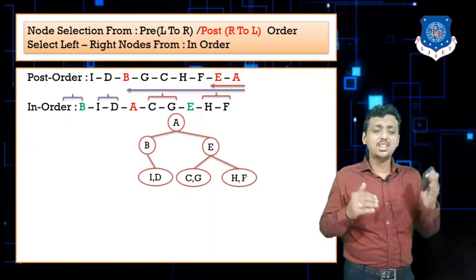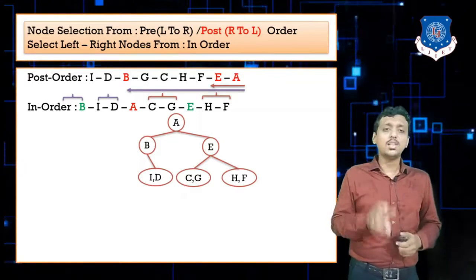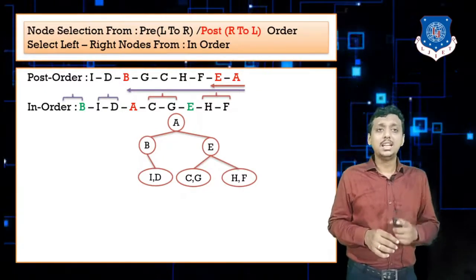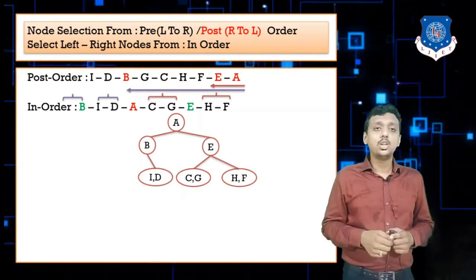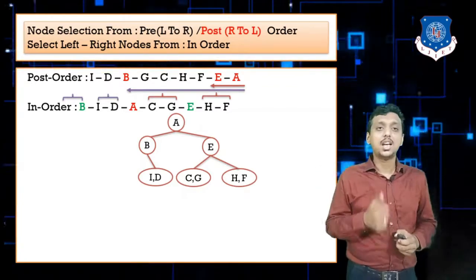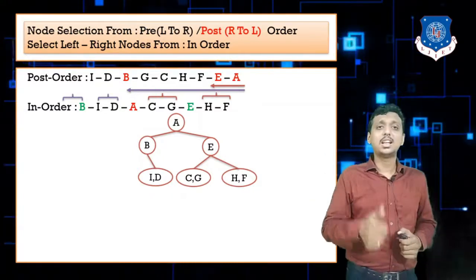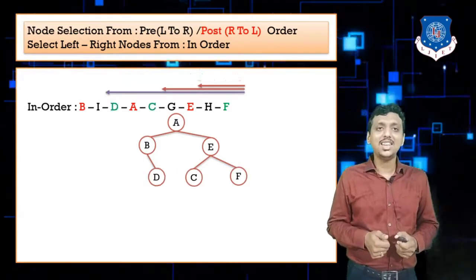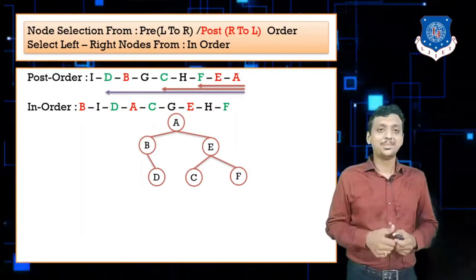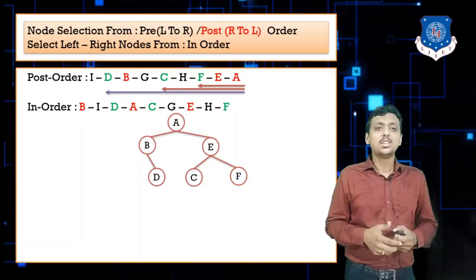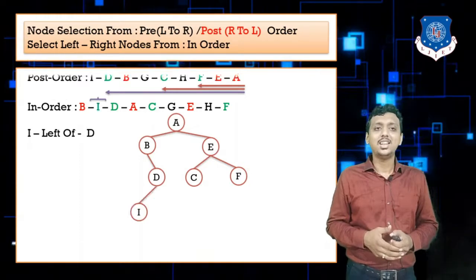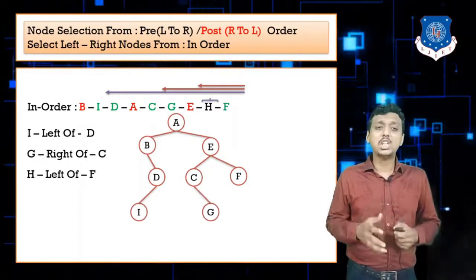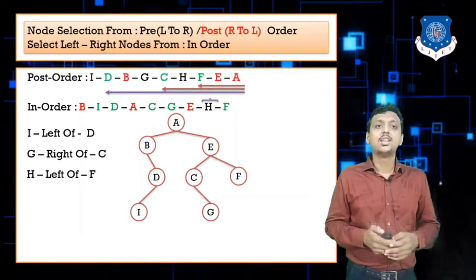Continuing right to left in post-order: from I and D, we select D first; from C and G, we select C; from H and F, we select F. Then the remaining nodes: I goes to the left side of D, G goes to the right side of C, and H goes to the left side of F.